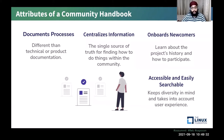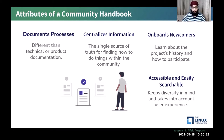Talking about the attributes of a community handbook, it generally gets divided into four different phases. First, documenting the processes — this is where you define all the processes involved inside the community, so that newcomers and existing community members can understand what all processes are involved in order to support leadership. Centralizing the information is very important as well; there should be a single source of truth for finding how to do things inside the community. Onboarding newcomers is again an important phase where you tell people how they can participate, what workflows and project history they need to understand before contributing.